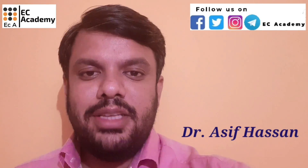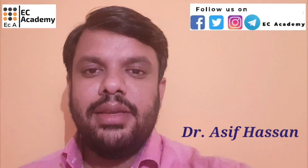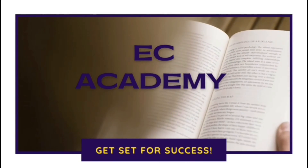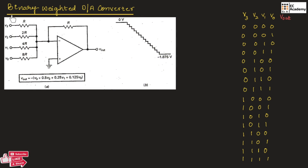Hello friends, welcome to ESEA Academy. In this lecture, let us understand binary weighted digital to analog converter. A digital to analog converter will convert the binary number into equivalent voltage or current, which means the binary values are converted into analog values using a digital to analog converter.